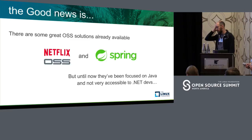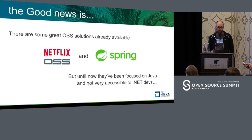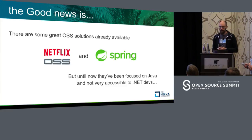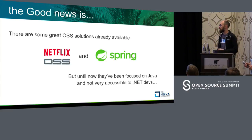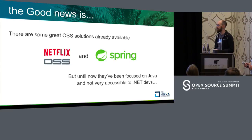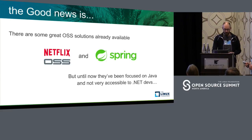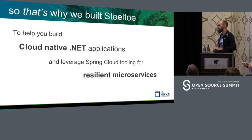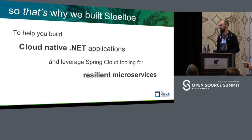The good news is Netflix solved a lot of these problems in the Spring Java community with their Netflix OSS initiative. They worked on Eureka service discovery and the Hystrix circuit breaker pattern and released a lot of this as open source. Pivotal has been continuing that development since Netflix moved on to other new technologies, and we were able to bring some of that back to .NET. That's why we built SteelToe — to help you build collaborative .NET applications leveraging Spring Cloud tooling and resilient microservices.